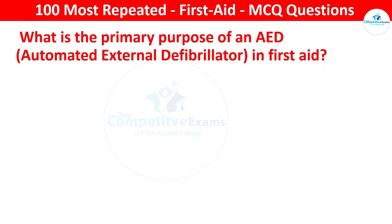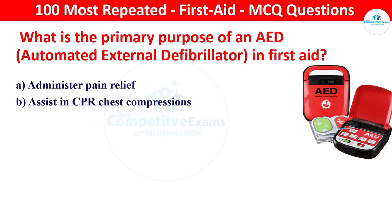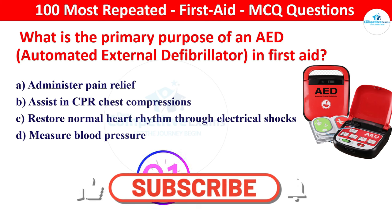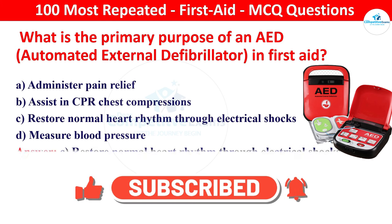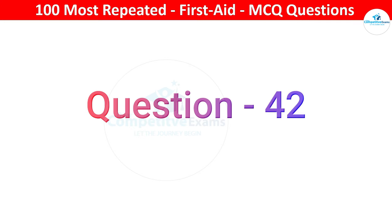Next question: what is the primary purpose of an AED (automated external defibrillator) in first aid? Your options: administer pain relief, assist in CPR chest compressions, restore normal heart rhythm through electrical shocks, or measure blood pressure. The right answer is restore normal heart rhythm through electrical shocks. AEDs are designed to deliver an electrical shock to restore a normal heart rhythm in cases of sudden cardiac arrest.